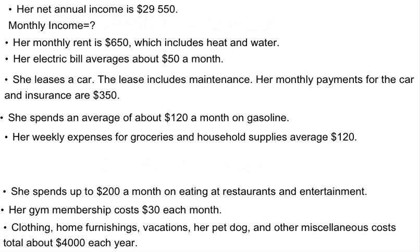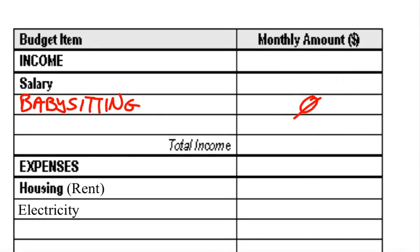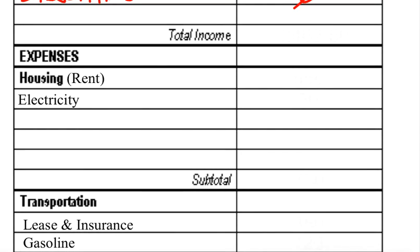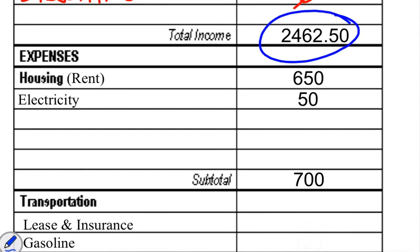Her monthly rent is $650, which includes heat and water, and her electric bill is $50. Going back to our expenses section, we have $650 for housing and $50 for electricity. We add those together to get a subtotal. These subtotals are very important — we need to keep track of them.